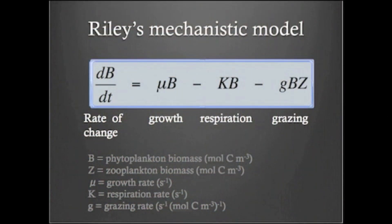So mu here is not a constant, but was a parametrization of those relationships. Respiration was parametrized as a function of temperature, and grazing depended both on the biomass of the prey and the predators, with Z being the zooplankton abundance, which was also observed. He used a very simple relationship, but some rather clever intuition about how the parameters would depend on environmental factors.